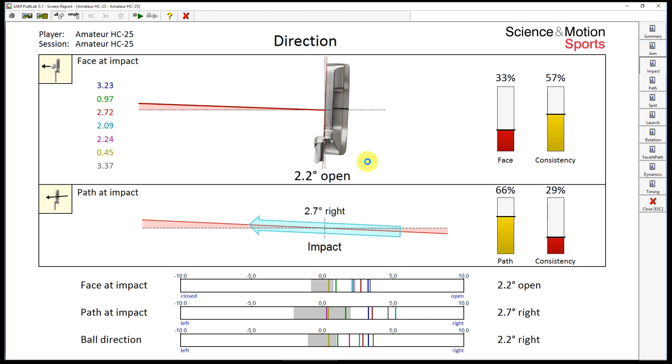Because 2.2 degrees is quite a big deviation, the corresponding score is only 33%. If you look at the single putts, you see there is a wide spread between the putts.